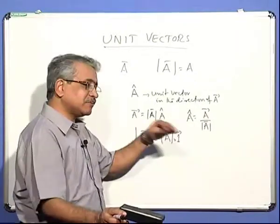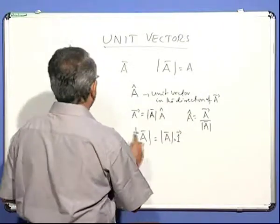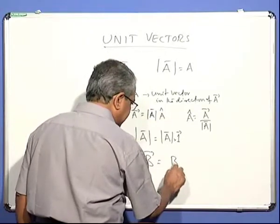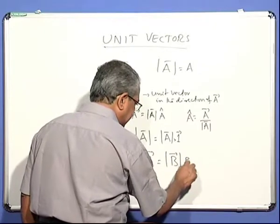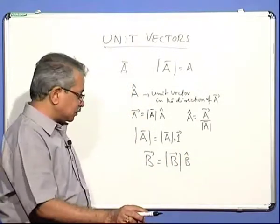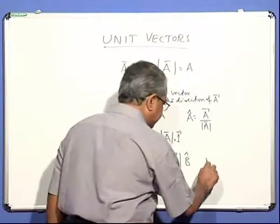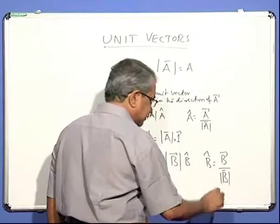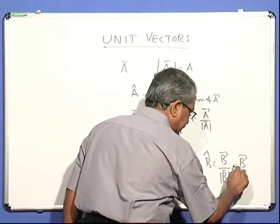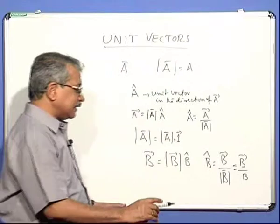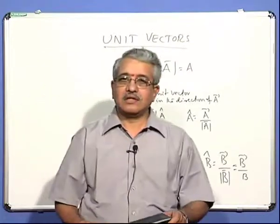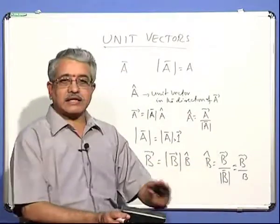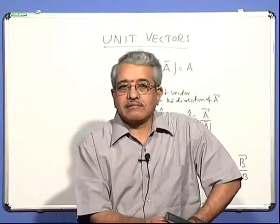A unit vector can be defined for any vector in any direction. For example, if there is another vector B, you can define it with a magnitude and direction. You can get B-cap by the same method: vector divided by its magnitude — written as B-cap = B / |B|. In any direction, for any vector, you have the unit vector representation method, which helps very well in the understanding and working of vectors.